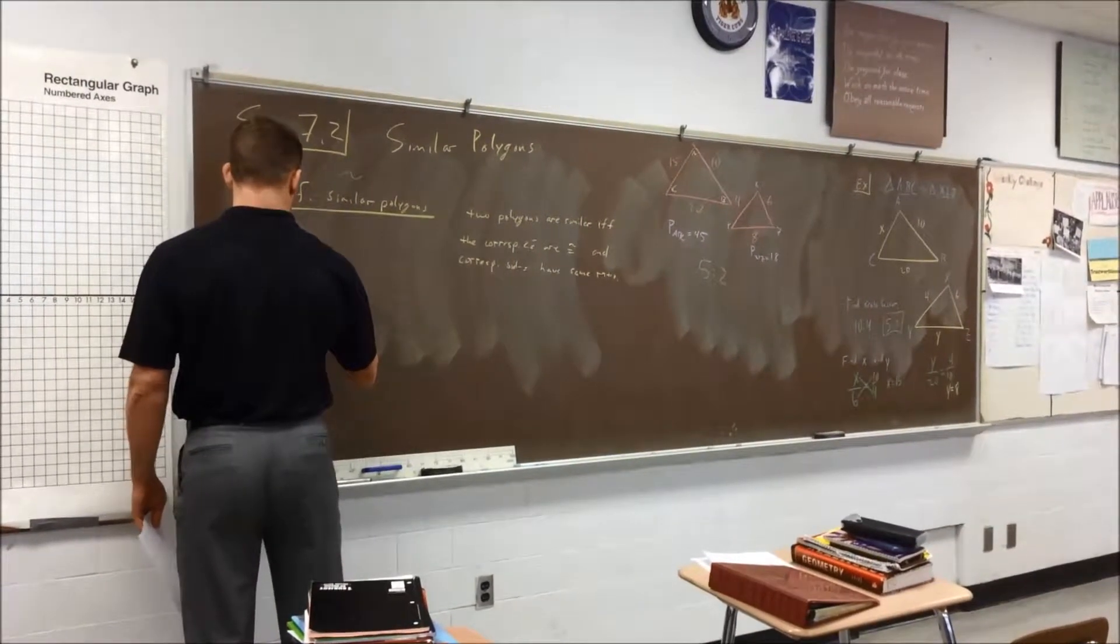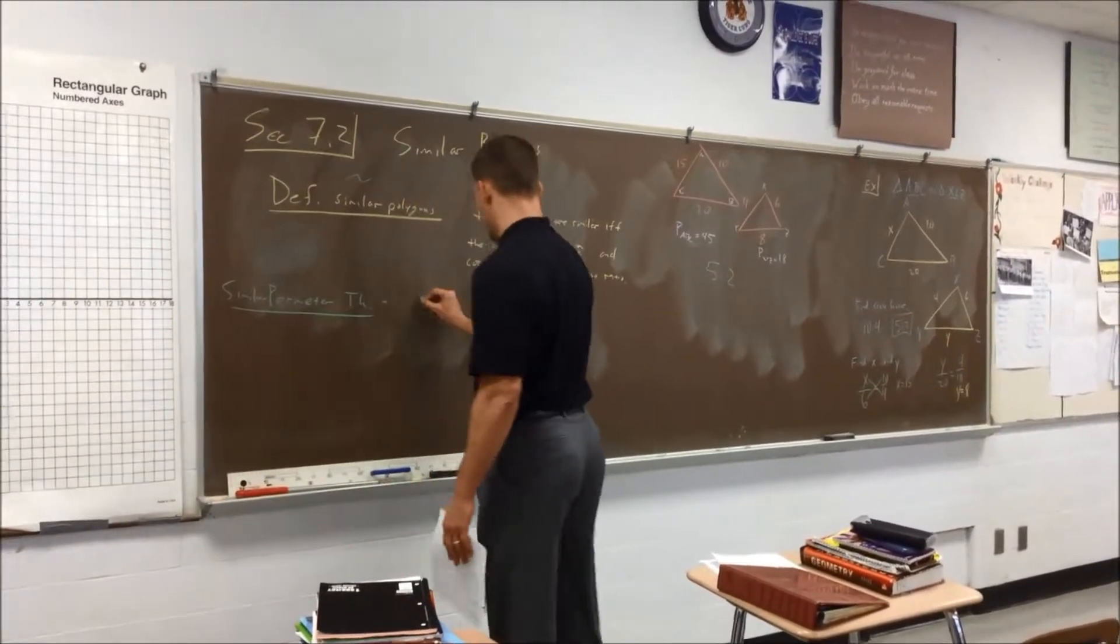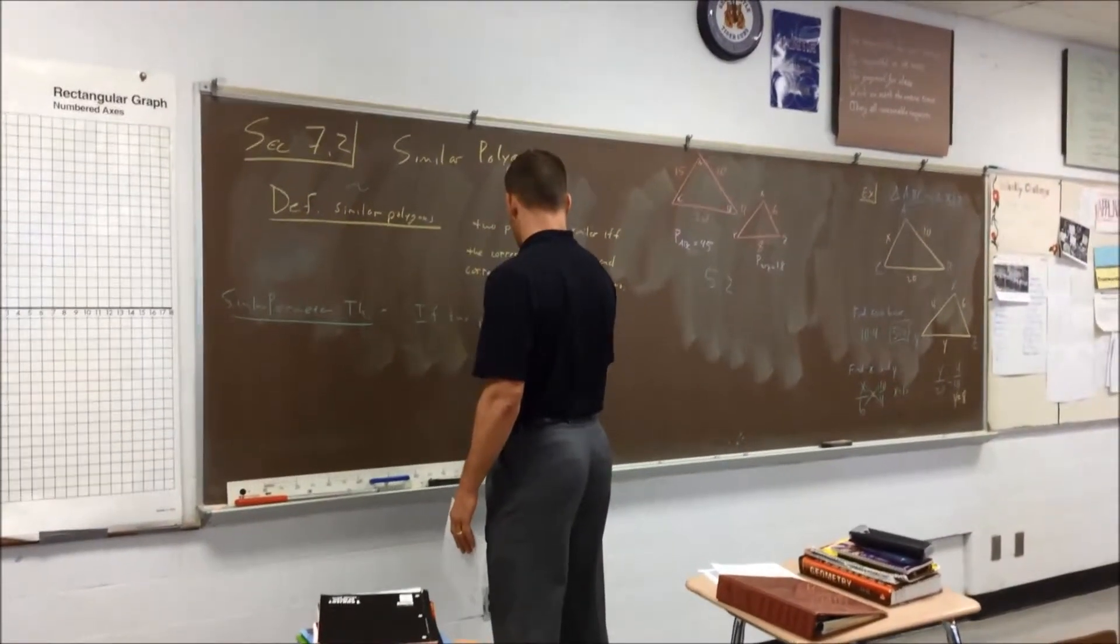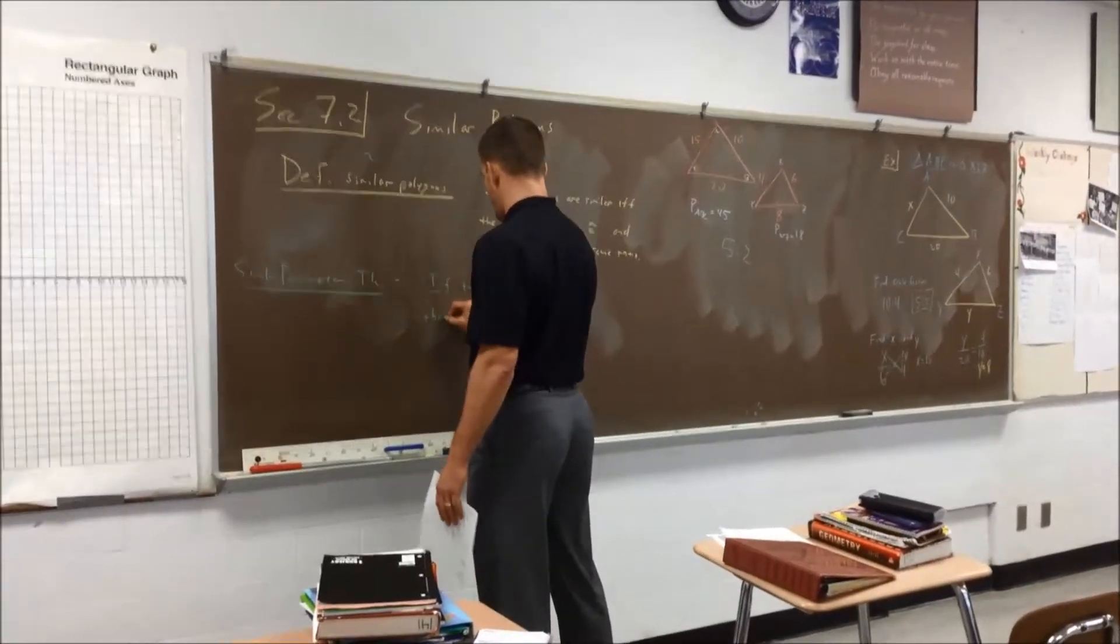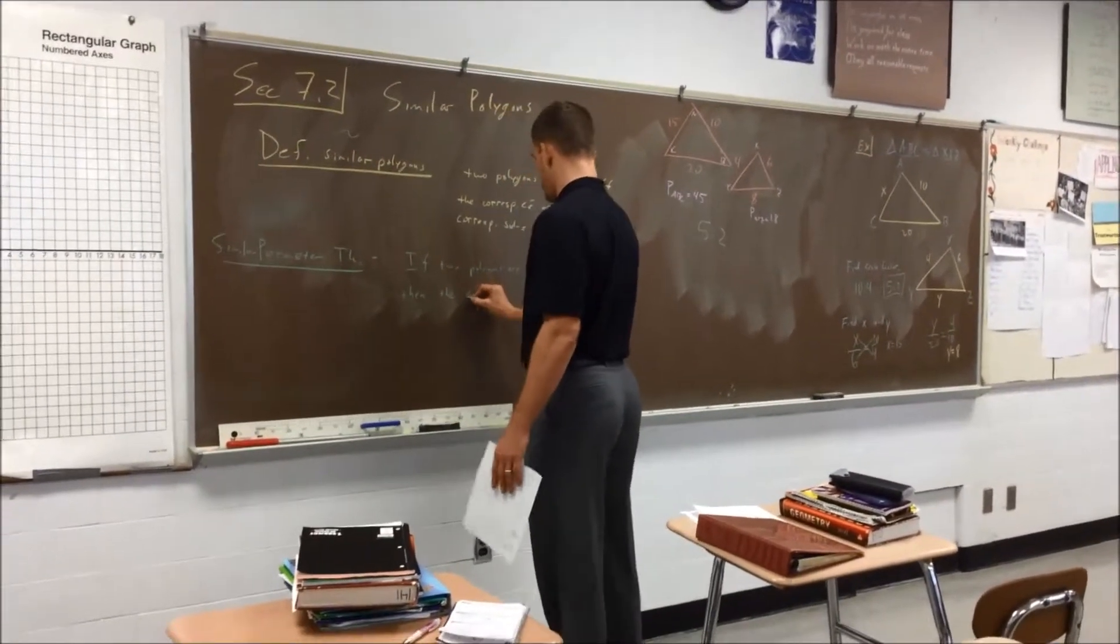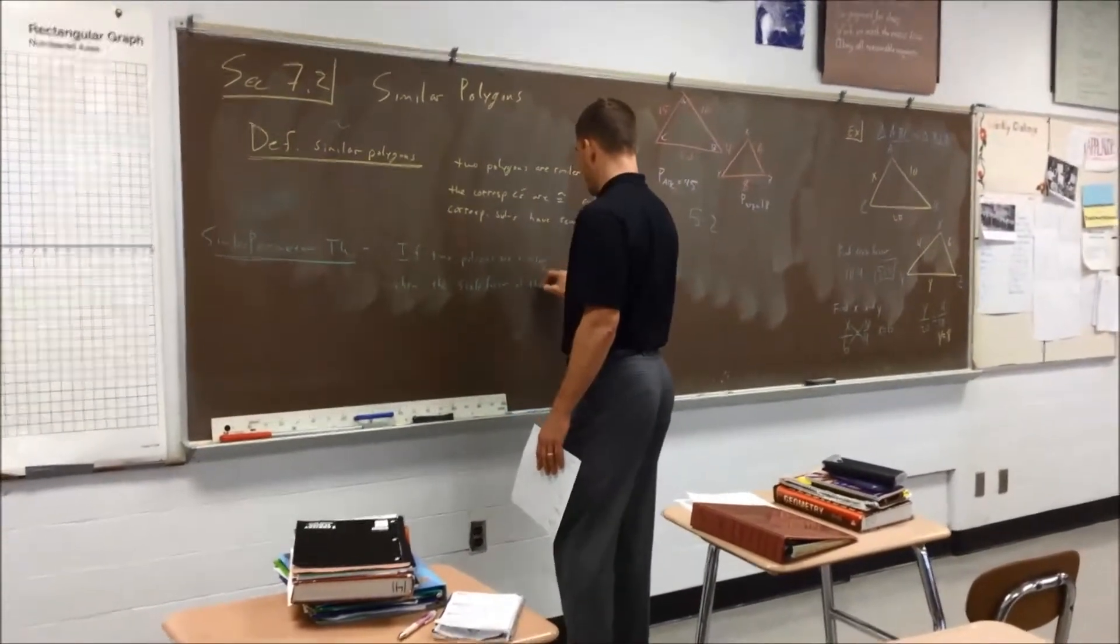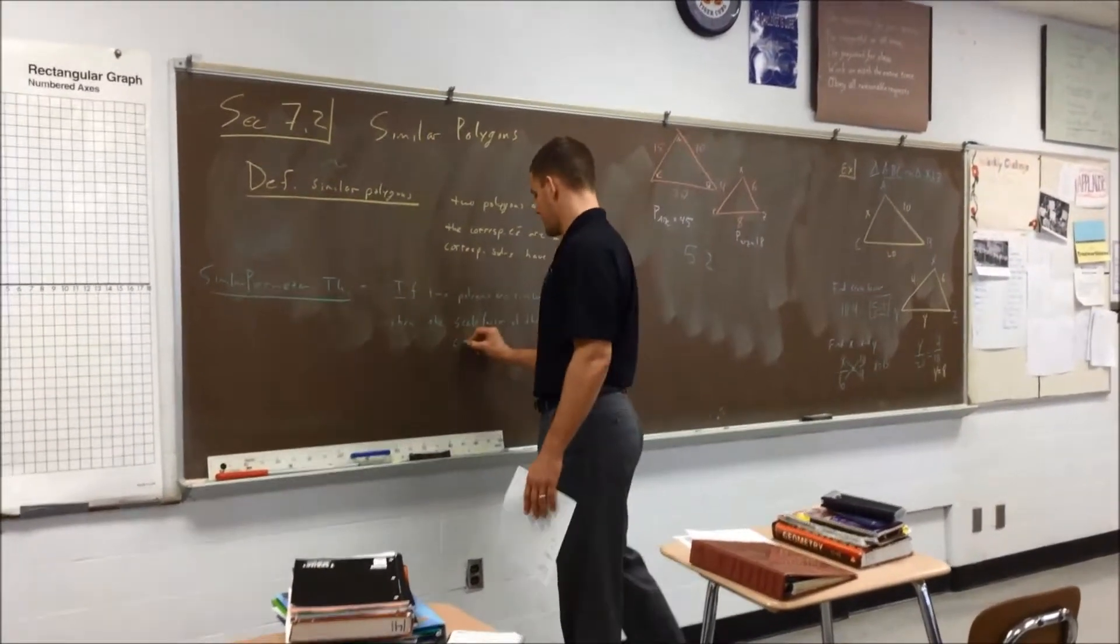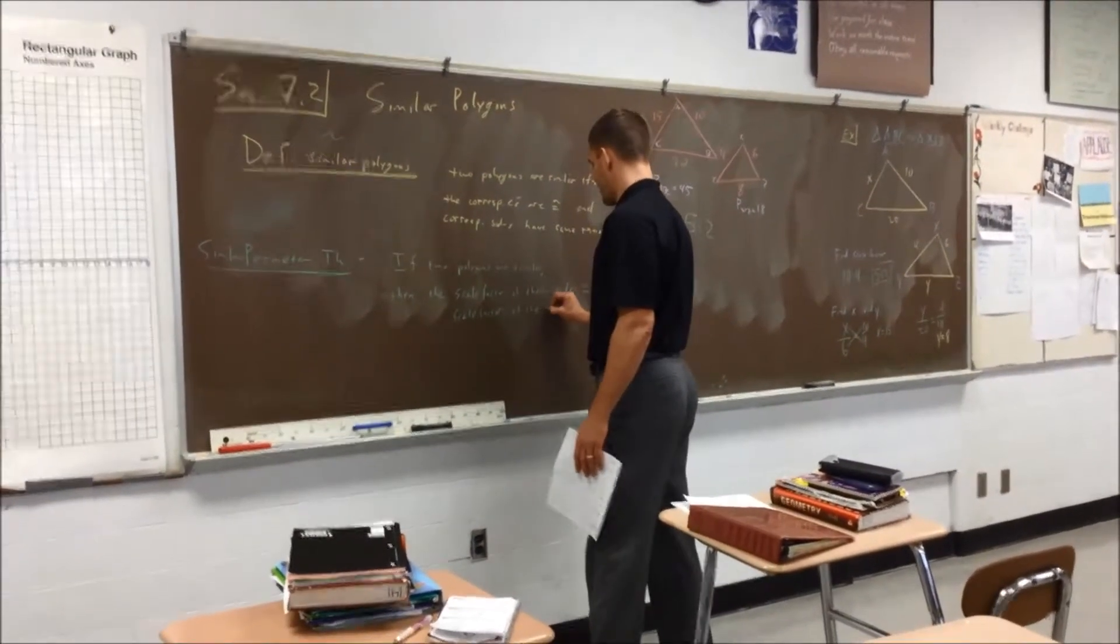And this is the similar perimeter theorem. If two polygons are similar, then the scale factor or ratio of their sides is equal to scale factor of their perimeters.